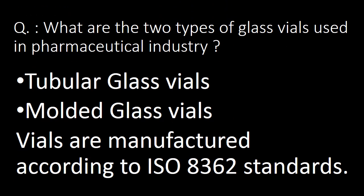Next important question: what are the two types of glass vials used in the pharmaceutical industry? The answer is tubular glass vials and molded glass vials. These are the two major types, and both are manufactured according to ISO 8362 standards.